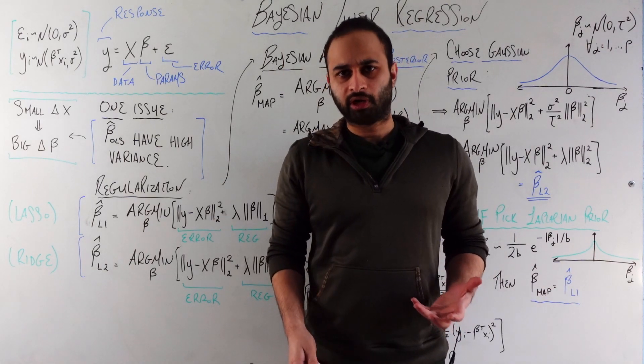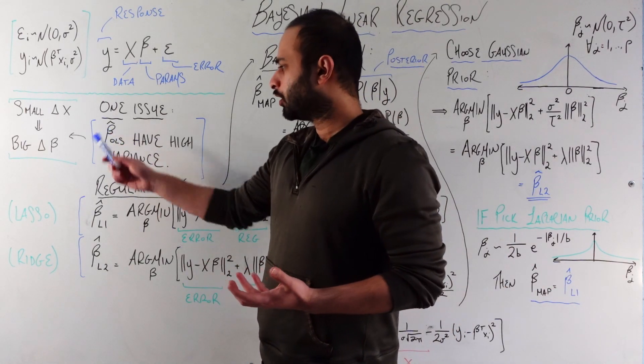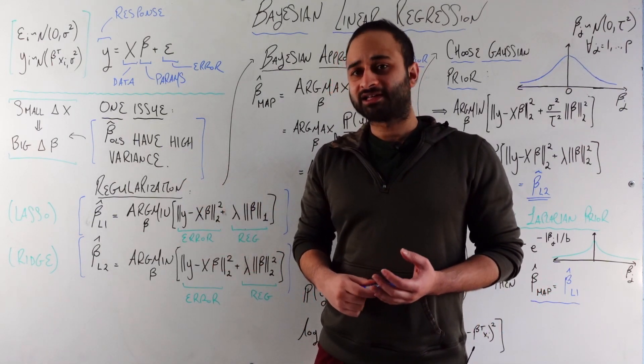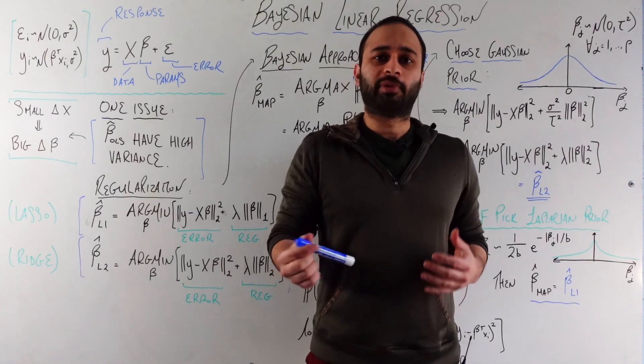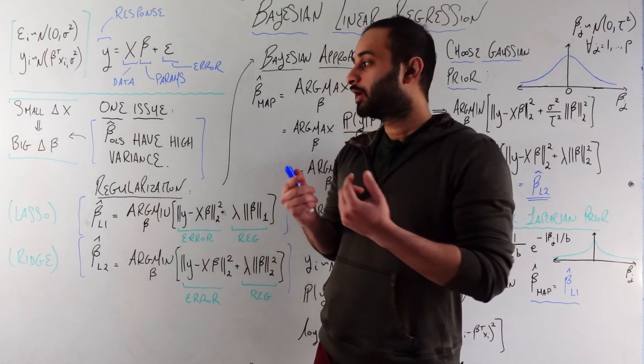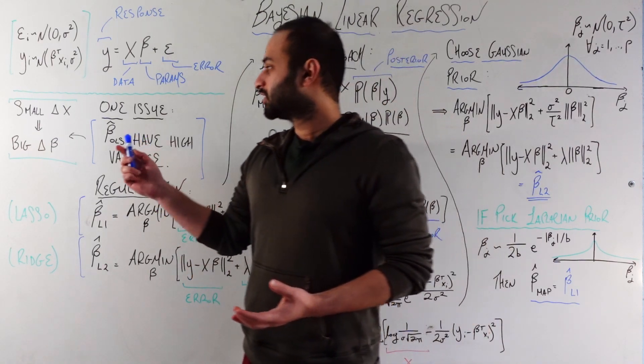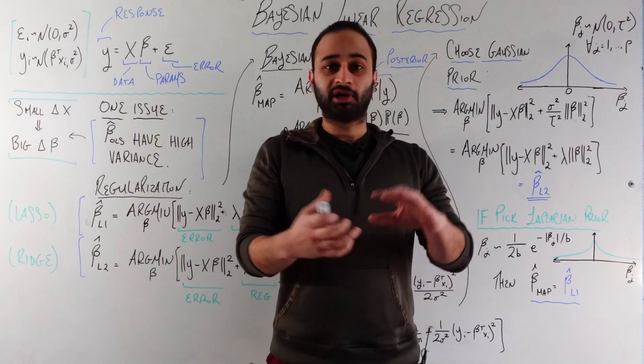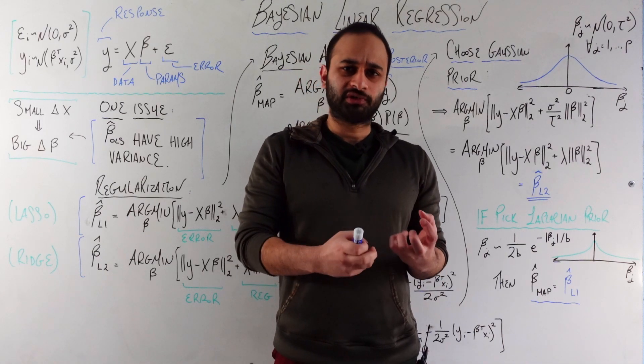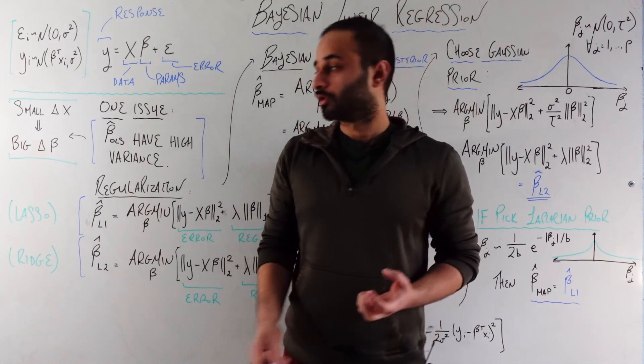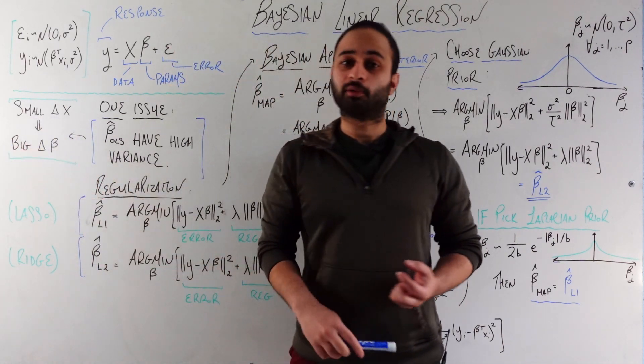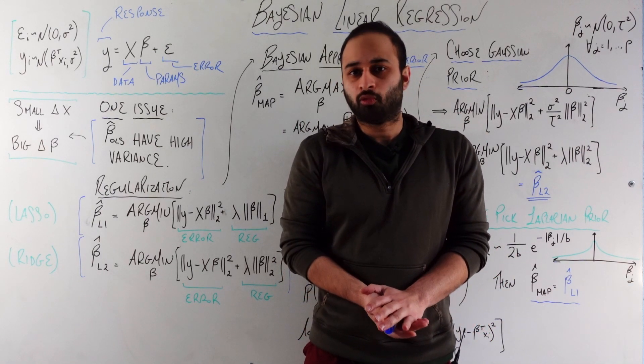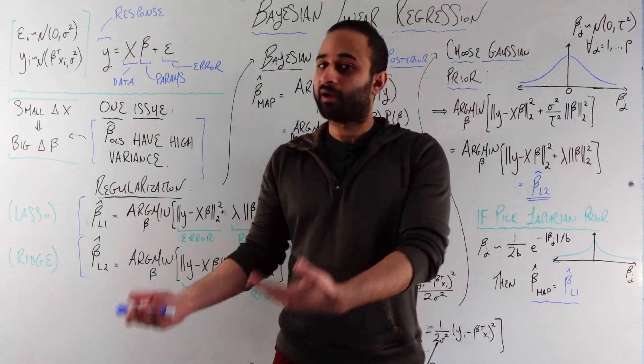I state these because they're going to be important for us as we talk about the Bayesian framework. One of the issues we know, if we're able to just solve for the beta OLS, we know how to solve for that in matrix form. But the issue with that solution is that it has high variance. This gets into the bias variance trade-off. In a gist of it, we're saying that small changes in our data x, so this n by p matrix has many observations of data in it, small changes in those observations could potentially lead to large changes in this beta that we've solved for. This is typically not something that's favorable in machine learning.